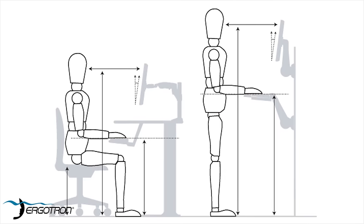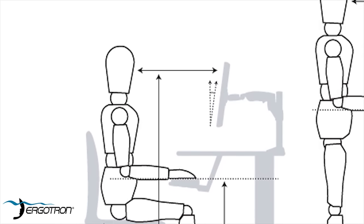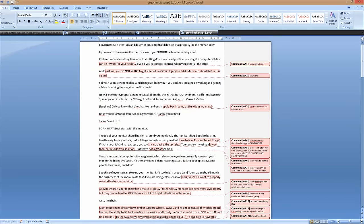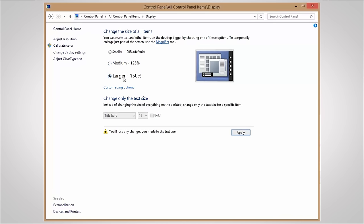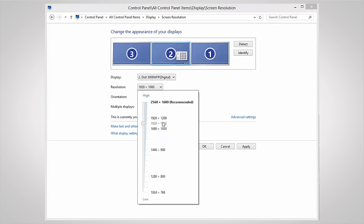So anyway, let's start with the monitor. The top of your monitor should be right around your eye level. The monitor should also be arm's length away from your face, but still large enough so that you don't have to lean forward to see things. If that makes it hard to read text, you can try increasing the text size or UI scale. You can even try using a lower than native display resolution, but that's kind of a terrible solution.